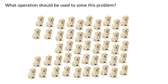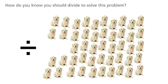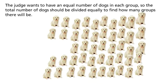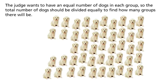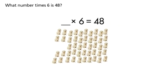Divide to find how many groups. How do you know you should divide to solve this problem? The judge wants to have an equal number of dogs in each group, so the total number of dogs should be divided equally to find how many groups there will be. What number times six is 48?